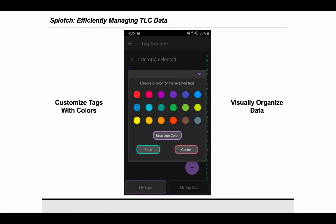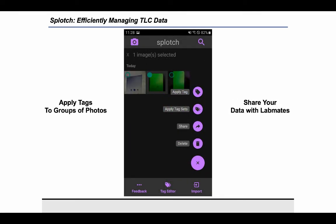You can customize your tags by choosing a color in the tag editor. You can apply tags to groups of photos at a time in the gallery to quickly organize your data. From here, you can also share your data with labmates.